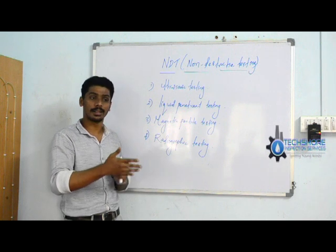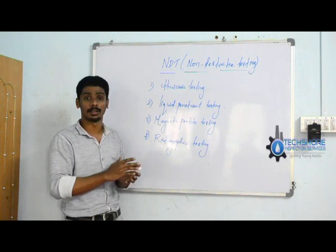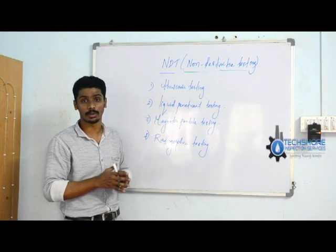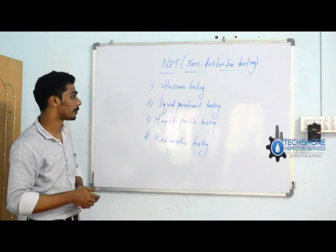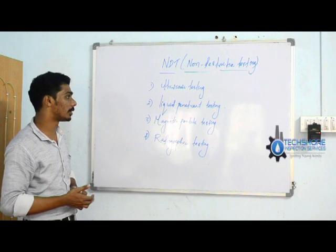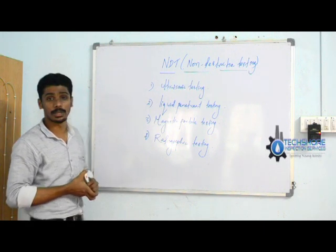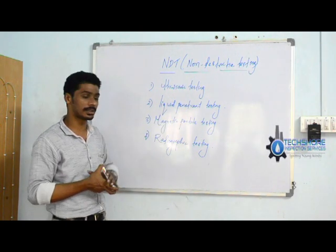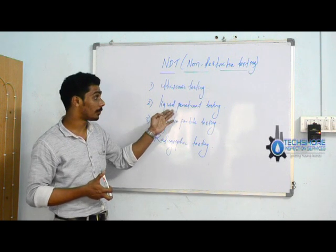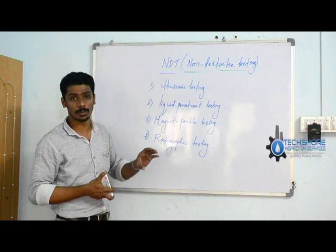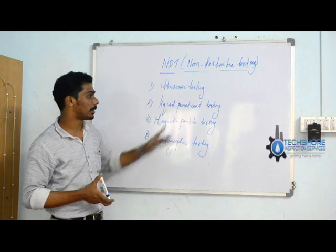Whatever energy is reflecting from your test material is collected by an instrument called a probe transducer. We will come to that later. The second method is liquid penetrant testing. Liquid penetrant testing is a method to find any kind of defects that are open to the surface — meaning defects at a depth of 0 to 3 mm that are open to your metal surface.